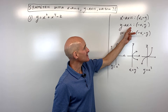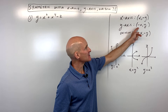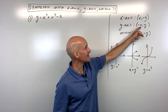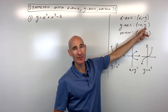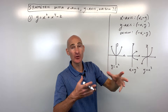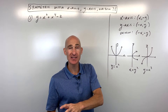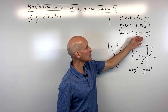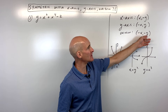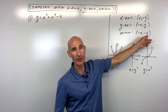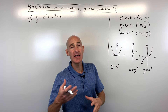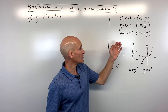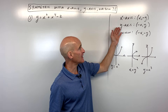For y-axis symmetry, the test is you replace x with negative x and leave y the same. If you get the original equation back, it's symmetric with respect to the y-axis. For the origin, you replace x with negative x and y with negative y. If you get back the original, then it's going to be symmetric about the origin.